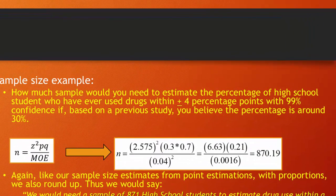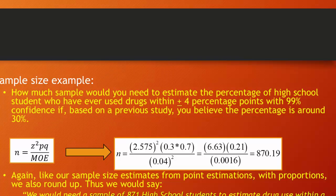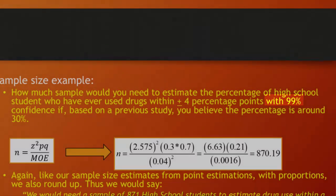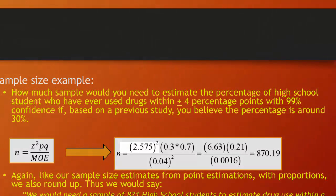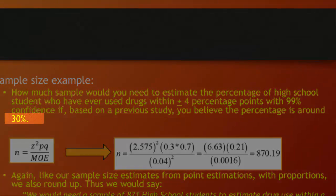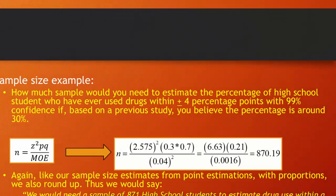How much sample would you need to estimate the percentage of high school students who've ever used drugs within a plus or minus 4 percentage point margin of error with 99% confidence if, based on a previous study, you believe the percentage is around 30%? Well, we just need to populate the z value, the p, the q, and the margin of error. We have all of that in this paragraph. The z value is we derive that from our confidence. We want to be 99% confident, so our z score is 2.575. The proportion that we're trying to estimate is 30%. The 30% as a proportion is 0.3.